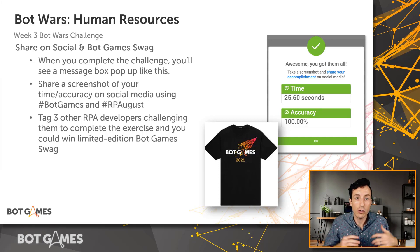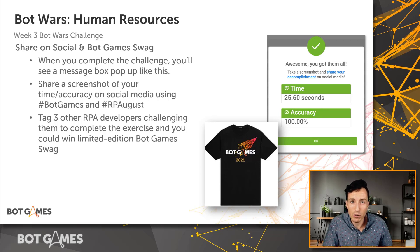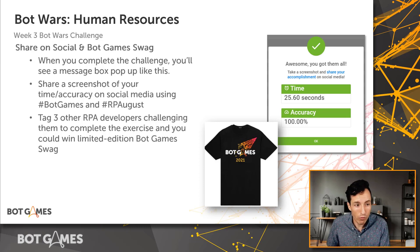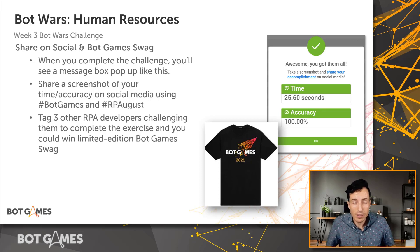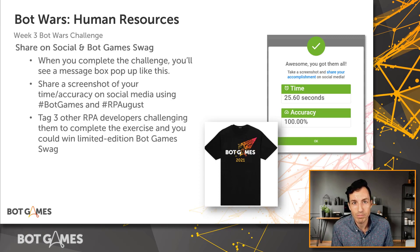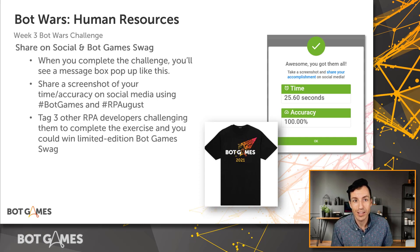As I announced last week, Bot Store downloads are available now. If you want to download a package from Bot Store and install it into Community Edition, you can do that — it will enable things like the JSON Object Manager and the Web Automation Package. So be sure to try those out if you want to experiment with your speed or approach. Use the Bot Games hashtag and the RPA August hashtag, and tag developers to challenge them. It's fun to see that competition on social media. Enjoy this challenge, have fun, and I'll see you on social media. We'll be back on Thursday for a tutorial on how we'd suggest solving this challenge. I'm Micah Smith — go be great!